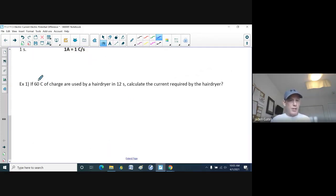Example one. If 60 coulombs of charge are used by a hairdryer in 12 seconds, calculate the current required by the hand dryer. So this is something that you can do at your house. Every appliance will have a rating on it of how much current it uses. In this case, we have 60 coulombs of charge. So that's our Q value. Of course, this morning you could figure out how many electrons that would take to come up with 60 coulombs of charge. Our time here is 12 seconds. Everything's in standard units here.